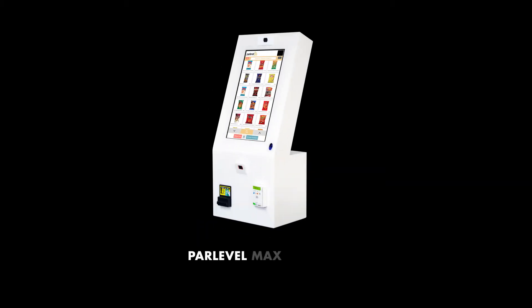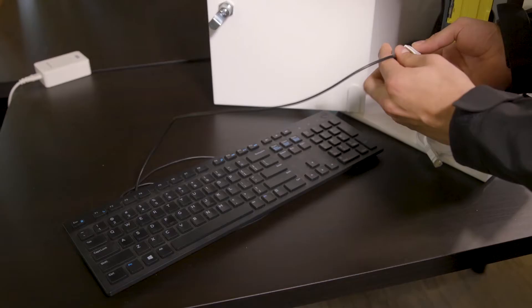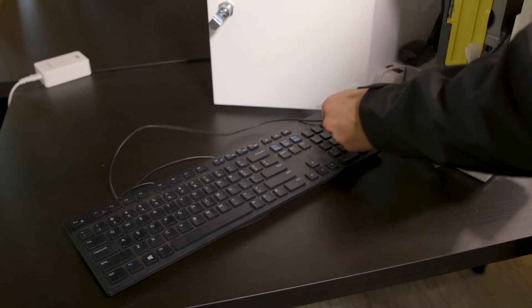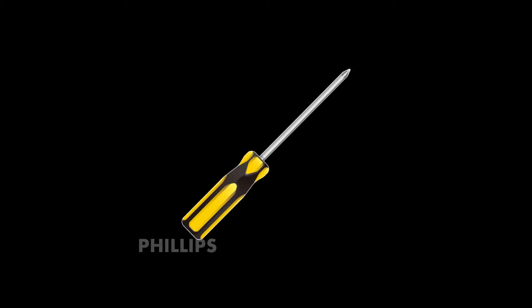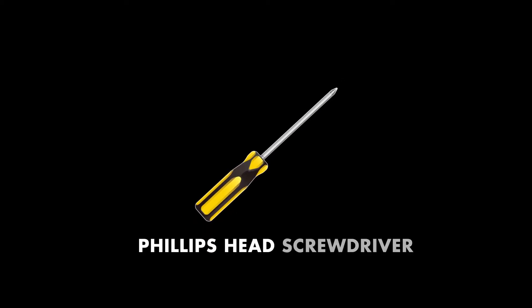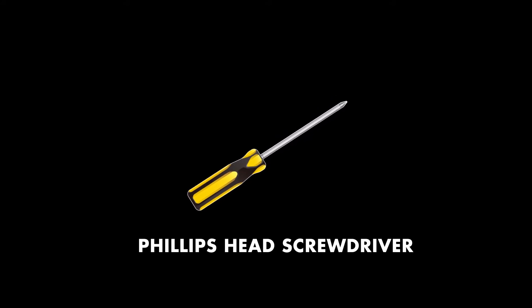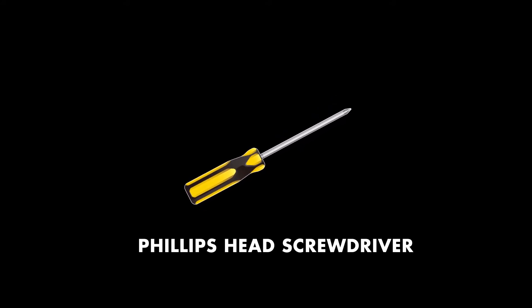The items required for the market installation will be the ParLevel Max kiosk, a USB keyboard, and a Phillips head screwdriver that can be used to remove the back panel off of the kiosk in case a longer Ethernet cable is needed.